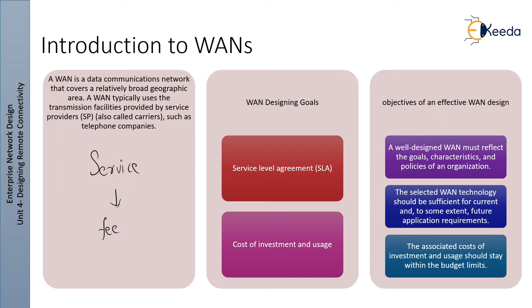The purpose of the Cisco Enterprise Architecture is to modularize the enterprise network. All WAN connections are concentrated in a single functional area called the Enterprise Edge. The Enterprise Edge provides access to remote sites and the outside world using various Layer 2 and Layer 3 technologies. WANs operate between the Enterprise Edge and the service provider edge.